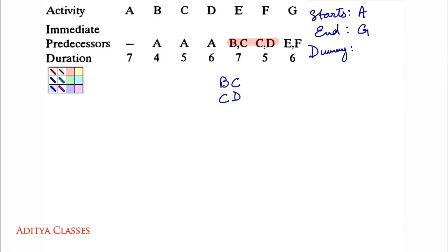So whenever you get this kind of relationship in predecessors, that C is pairing with B and C is pairing with D. In this case, we will need two dummies and both dummies will be for C.